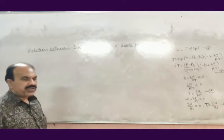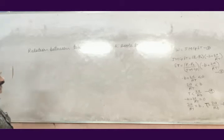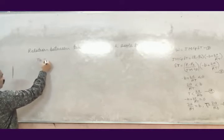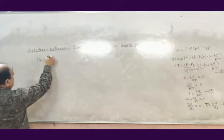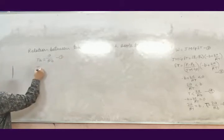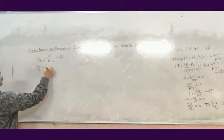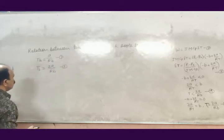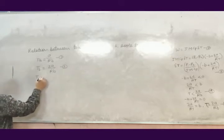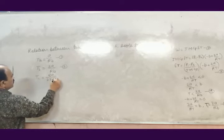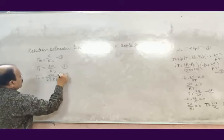The relation between the temperature of inversion and boil temperature. We know that boil temperature is given by Tb = A / Rb, equation number 1. The temperature of inversion Ti is given by 2A / Rb, equation number 2. The critical temperature is given by Tc = 8A / 27Rb, equation number 3.